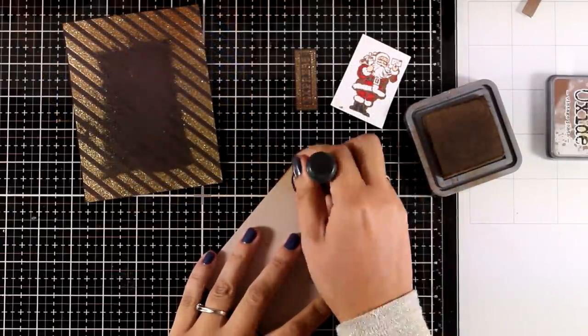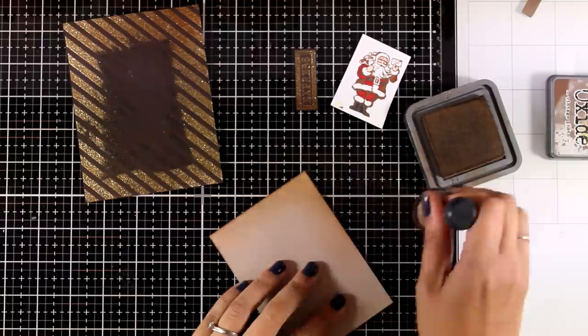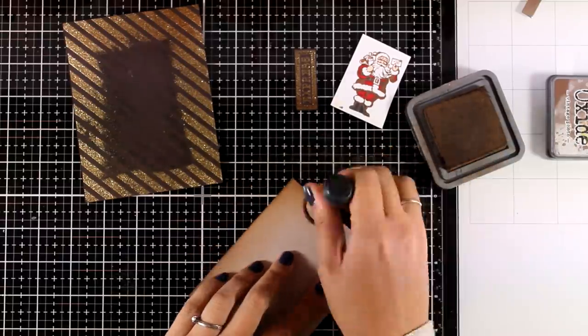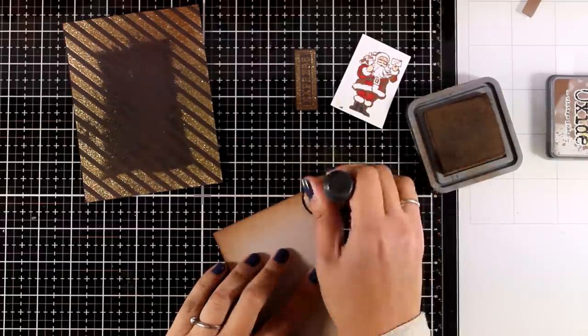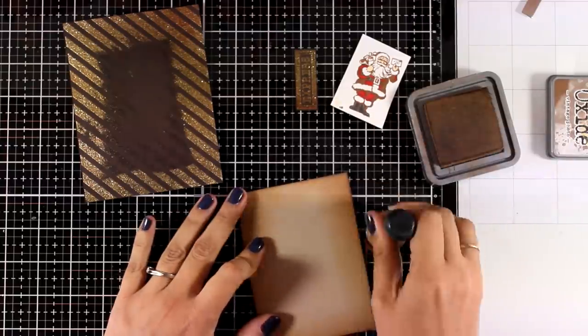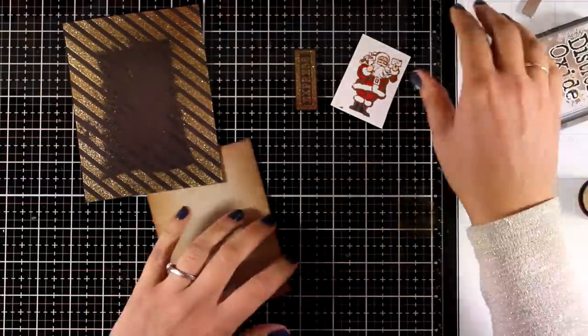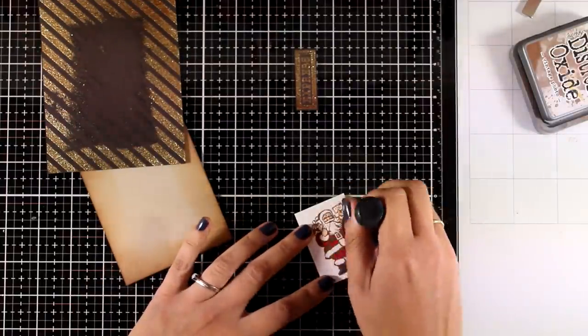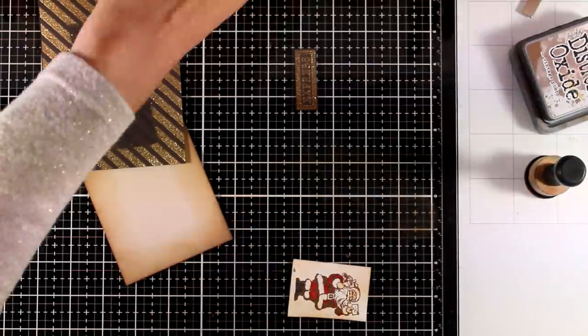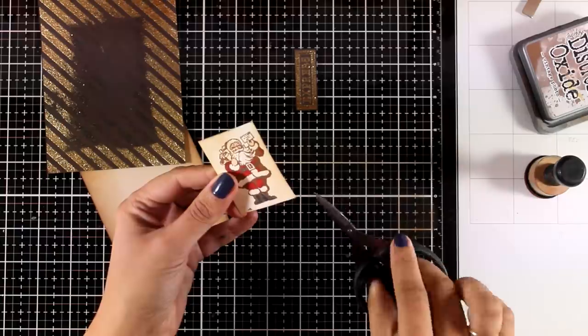And if you follow my channel you probably know that when I am going for the vintage look on a card I always like to bring my Distress Oxide ink in vintage photo and I always like to use a Desert Storm cardstock by Nina. This is the lovely craft cardstock that I'm using here. And I'm going to ink up very lightly santa as well so that he's not as bright white as it was before.